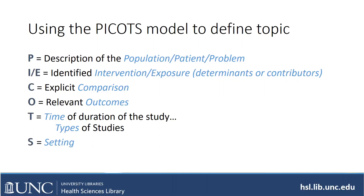Sometimes it would be exposure — for example, children exposed to lead paint, radiation, or secondhand smoke. In public health, you might be looking at social determinants or contributors to a problem. Sometimes you'll have a comparison — the intervention would be one kind of treatment compared to another, or one drug compared to another, or something compared to nothing — treating a patient with a disease versus not treating them. You also want to think about what outcomes you're looking at, such as curing a disease, lower mortality rate, or smoking cessation.